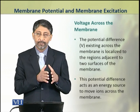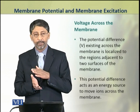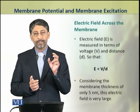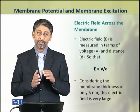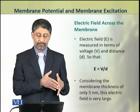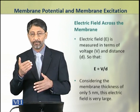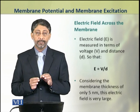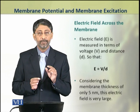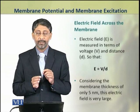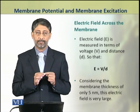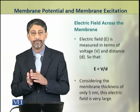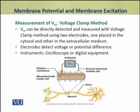The potential difference acts as a source of potential energy with which the ions move across the membrane. This voltage gives rise to an electric field that is measured in terms of volts per distance, so that E is equal to V over D. The electric field is inversely proportional to the distance. If we consider that distance is the thickness of the membrane, then it is only 5 nanometers. As a result, this short-looking electric field is actually very large.